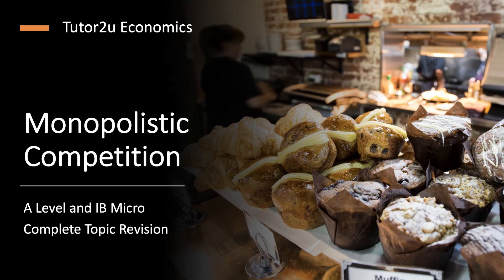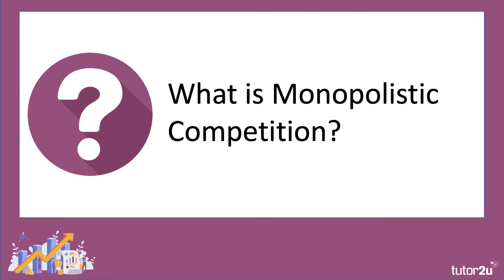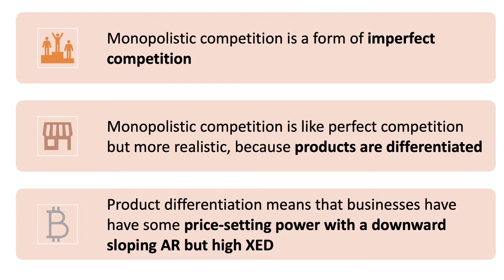Welcome to a full topic video looking at monopolistic competition. It's a key market structure and a form of imperfect competition, which is pretty close to perfect competition but more realistic, because we drop the assumption that every good or service is homogenous. In monopolistic competition there are many firms, but they're each selling differentiated products, and that means they each have some degree of price-setting power with a downward sloping average and marginal revenue curve.